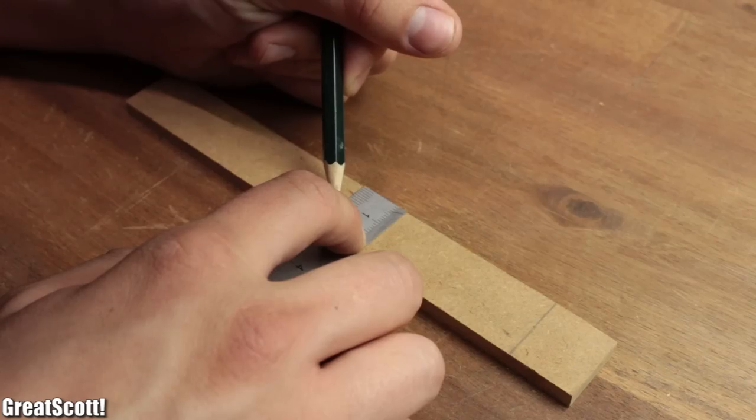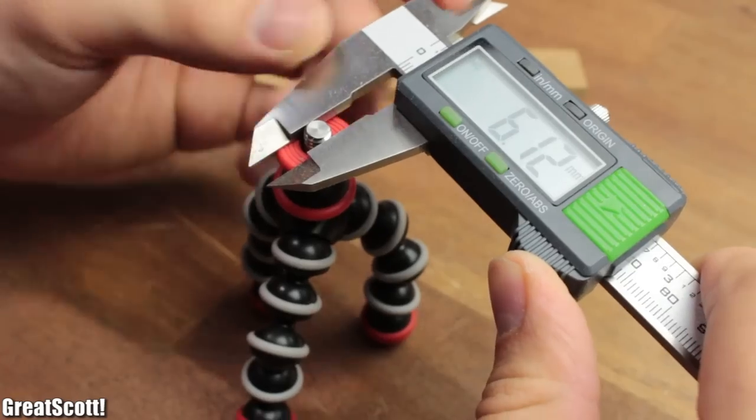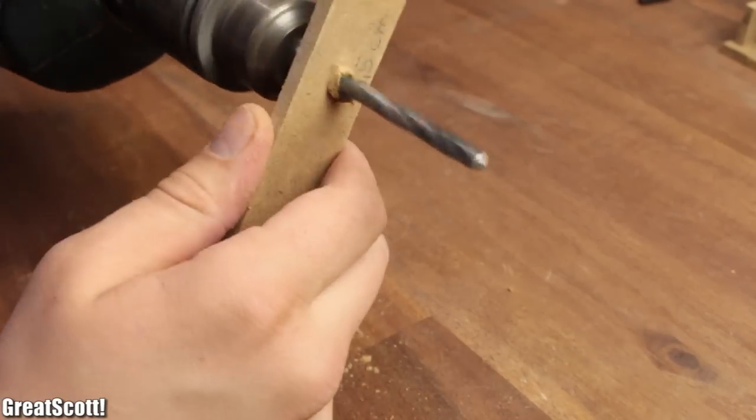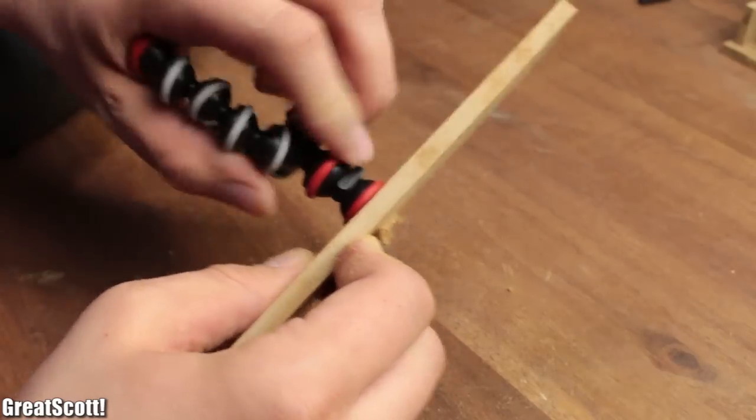I marked the exact center of my bottom wall piece and measured the necessary hole diameter. Afterwards I drilled the hole and made sure that it is a tight fit.